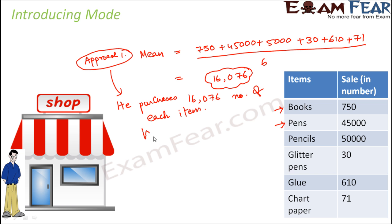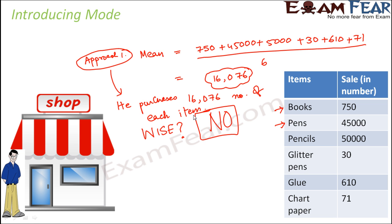Do you think this is a wise decision? This year 45,000 pens were sold, yet next year he is planning to buy only 16,076 pens — so he will very quickly run out of stock. Similarly, only 30 glitter pens were sold this year, but he is planning to buy 16,076 glitter pens. A lot of glitter pens will just remain unsold in his shop. So in this scenario, finding the mean was not the right approach.